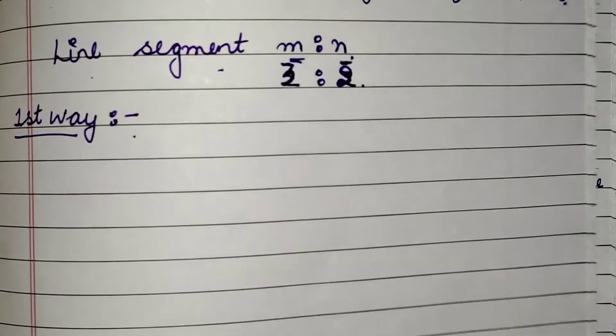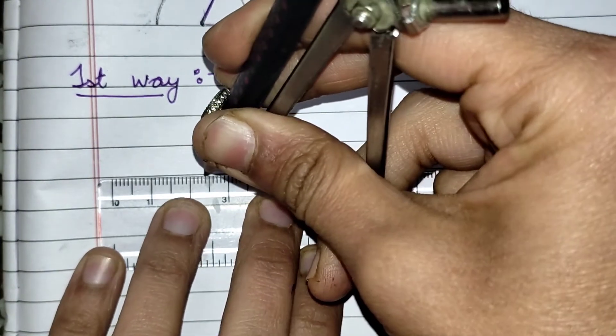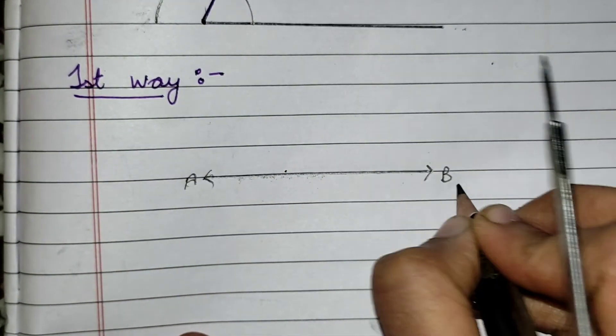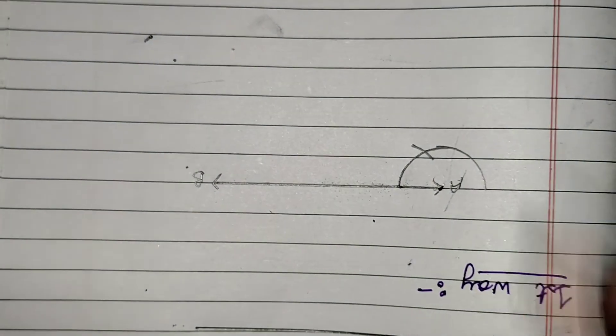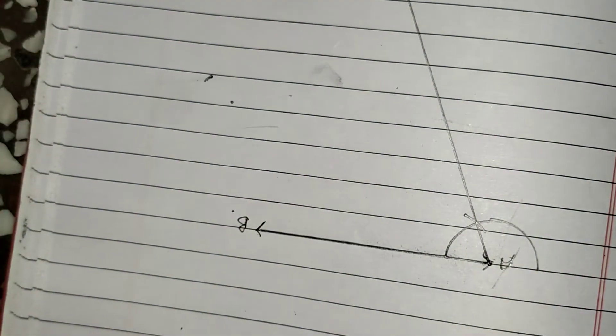There are a few steps to follow while doing the construction using the first method. First, draw a line segment — the one you have to divide — and name it AB. At point A, draw an acute angle. You can draw this acute angle with the help of a compass, as you have used this method in class 9th. Let us suppose I have drawn an acute angle of 60 degrees.